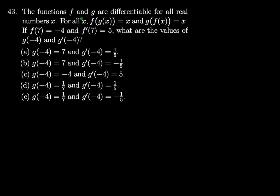Problem 43: The functions f and g are differentiable for all real numbers x. For all x, f of g of x equals x and g of f of x equals x. If f of 7 equals negative 4 and f prime of 7 equals 5, what are the values of g of negative 4 and g prime of negative 4?